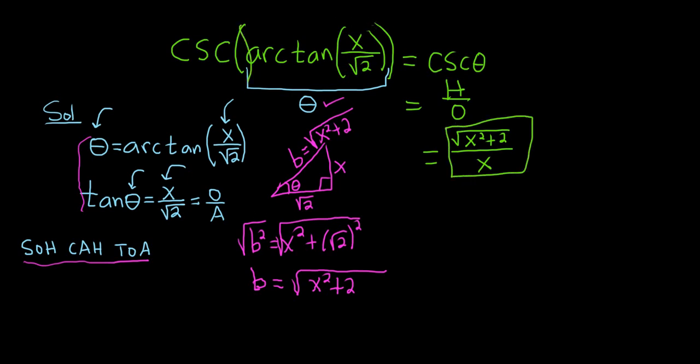So really quick recap. First step, you call it theta. Then use the fact they're inverses, use SOH-CAH-TOA, draw a triangle, solve for all the sides in your triangle, go back to the original question, use SOH-CAH-TOA again, and you are done. And that's how pros do it. I hope this video has been helpful.